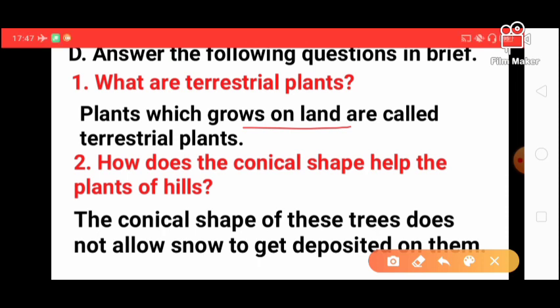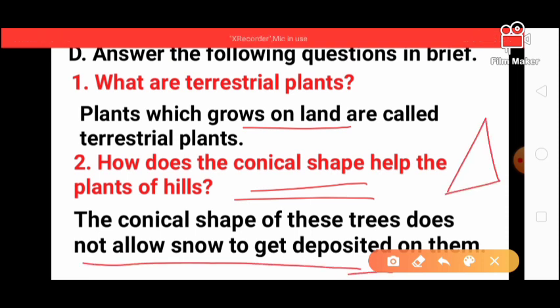Next, how does the conical shape help the plants of hills? The conical shape of these trees does not allow snow to get deposited on them. When there is snowfall, the snow slides down and does not get deposited.